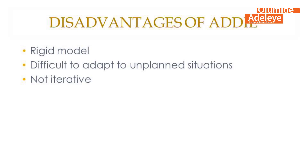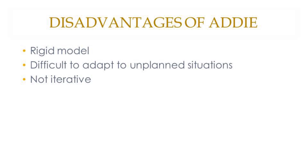The disadvantages: ADDIE follows a strict order where one thing must be concluded before the next, making it rigid. It may not accommodate changes as easily as needed — you might get to the end before carrying out evaluations, only to find problems that require starting over. The rigidness can make it difficult to adapt to unforeseen circumstances. It can also be very expensive and time-consuming since each stage must be completed before the other.